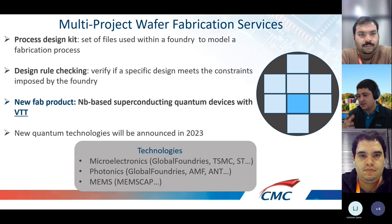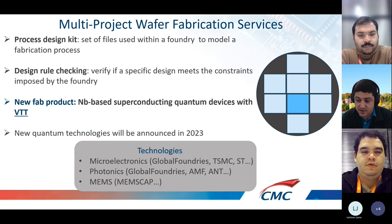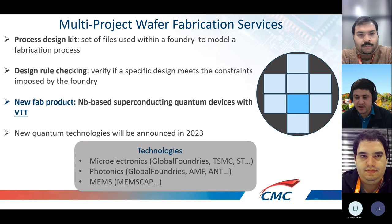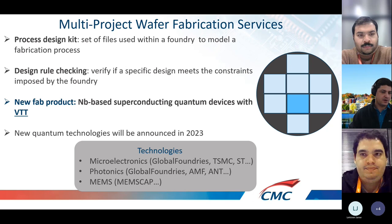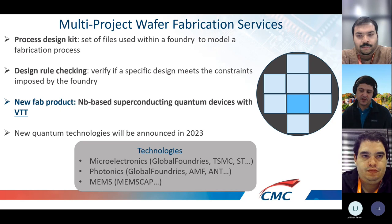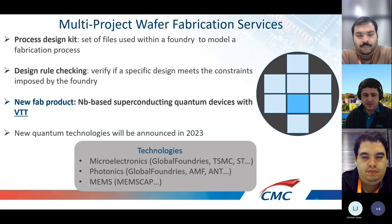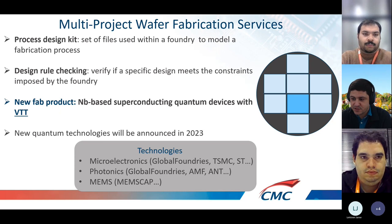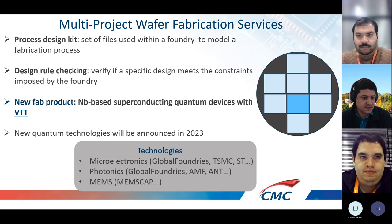To enable those services, we provide a full process design kit developed for the VTT process. It contains a library of reference designs including capacitors, inductors, SQUIDs, junctions, coplanar waveguides, and transmission line resonators, among others. When you participate in our multi-project wafer fabrication, we also provide a design rule check to ensure your design meets the constraints of the fabrication process. We are very happy to partner with VTT to offer what is basically the world's first multi-project wafer service for superconducting quantum devices.